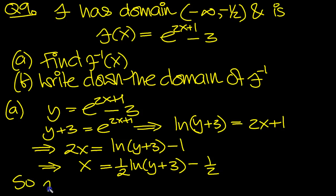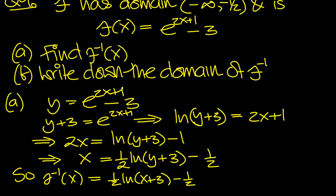So we can now write the inverse function, f to the minus 1 of x. Swap the symbols around, so this now becomes an x. So that's the inverse function, part a done.